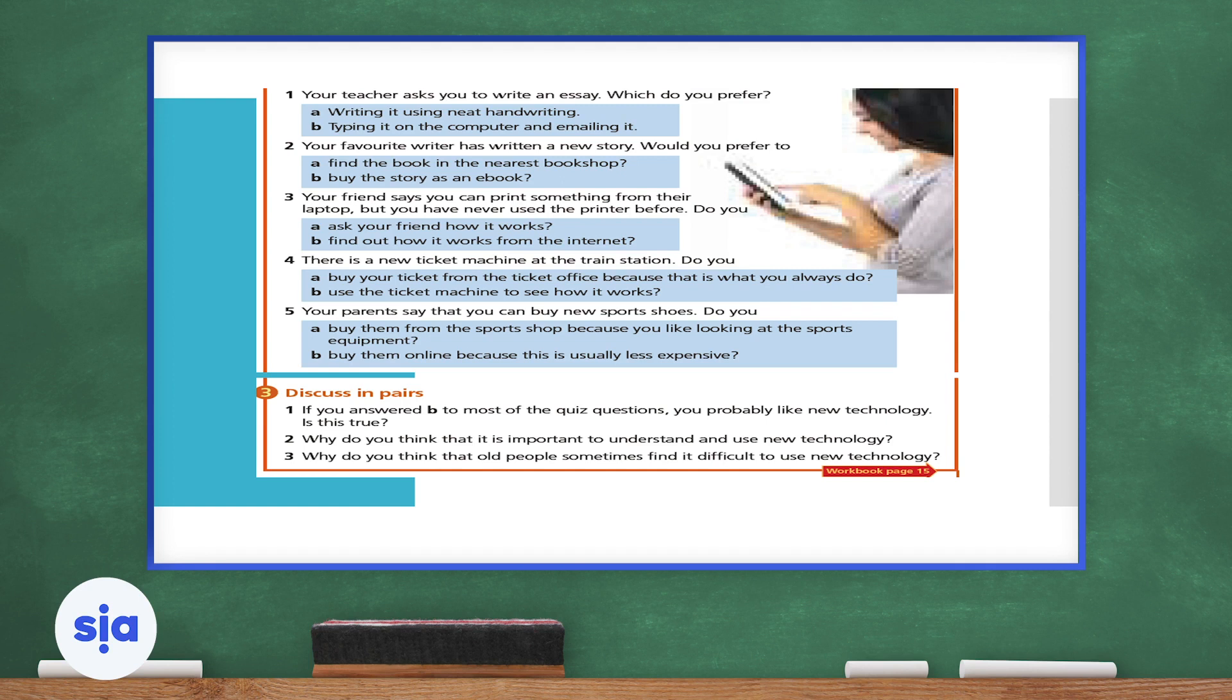Let's move on to number two. Your favorite writer has written a new story. Would you prefer to A, find the book in the nearest bookshop? Or would you buy the story as an e-book? Choose one answer. Remember, there are no right or wrong answers. They are just your preferences. So choose what you would actually do. Is it 2A or B? Write your answer in your notebook to me. Let's jump to number three. Your friend says you can print something from their laptop, but you have never used the printer before. Do you ask your friend how it works? Or do you find out how it works from the internet? Choose one answer for number three. Is it A or B?